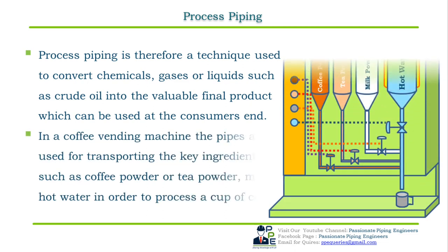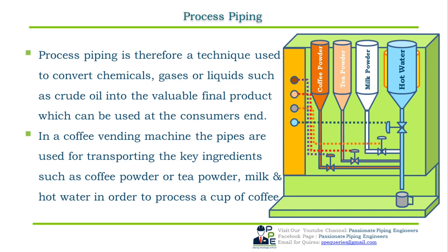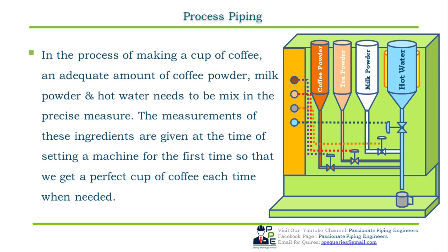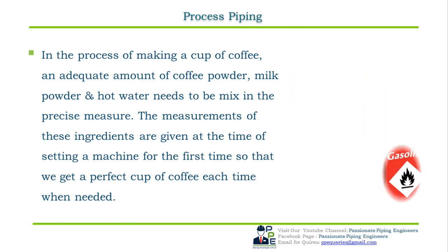To understand this, let's take the example of a tea and coffee vending machine. In a tea and coffee vending machine, pipes are used for transporting key ingredients such as coffee powder, tea powder, milk, and hot water in order to process a cup of coffee. An adequate amount of coffee powder, milk powder, and hot water needs to be mixed in a precise measure — just as settings are pre-configured in the machine to produce a perfect cup. The same concept applies in process piping, chemical plants, and refineries.